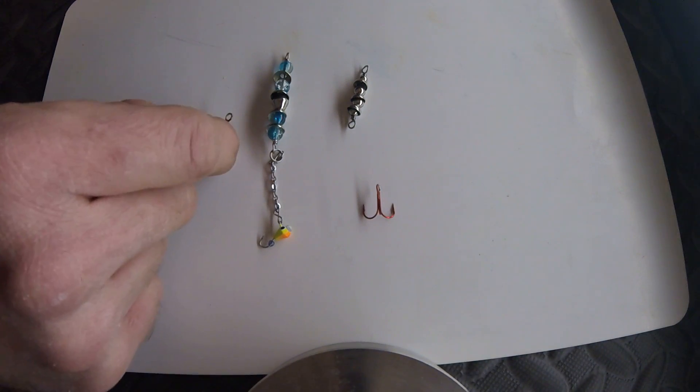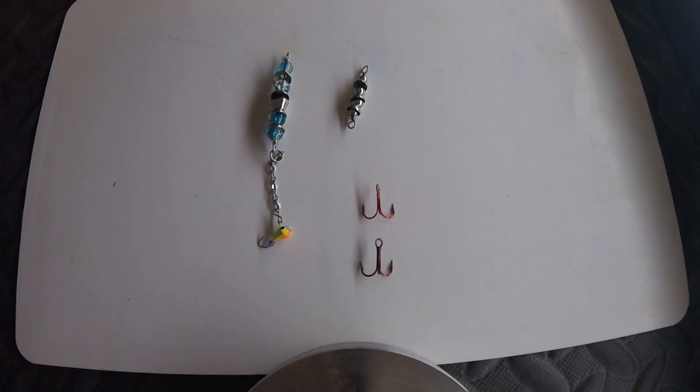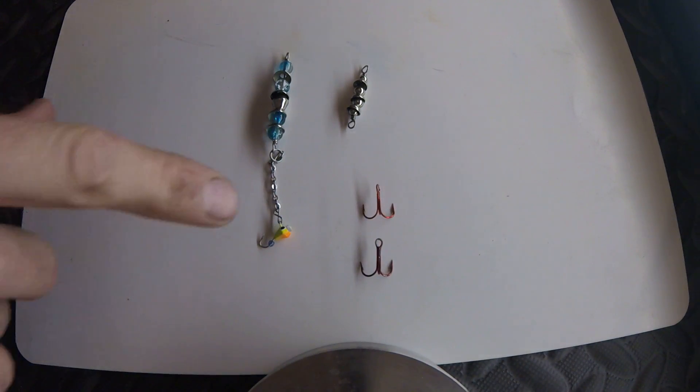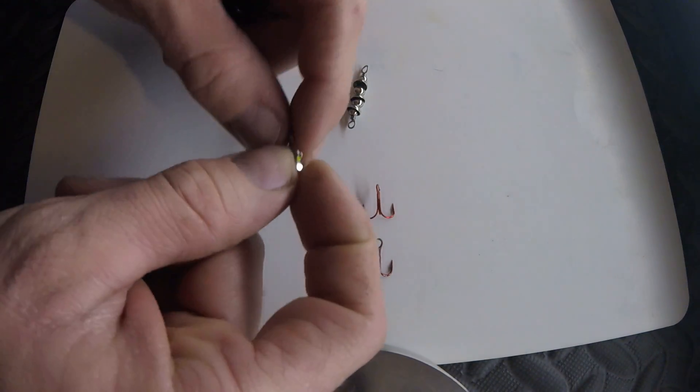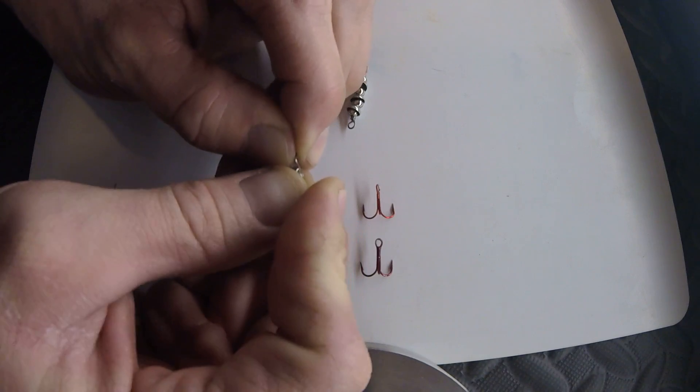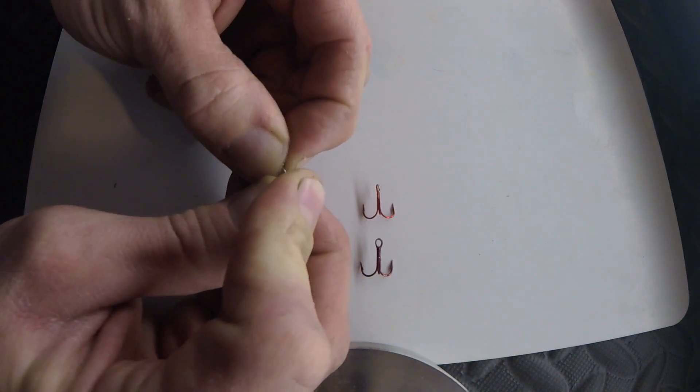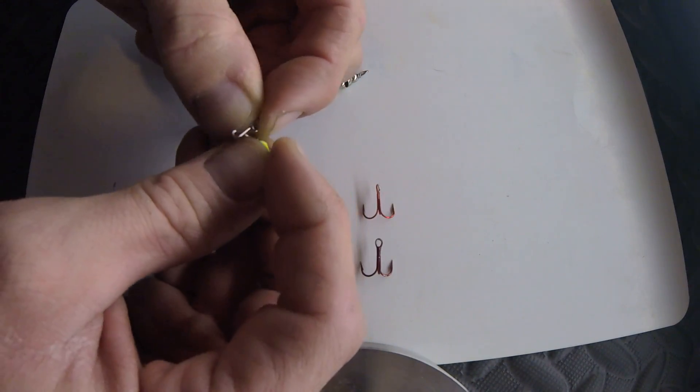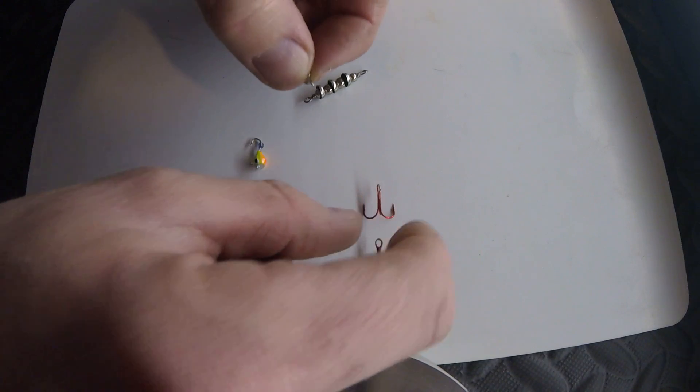You guys get the idea. Providing that the jig head has a big enough hole in the hook, you can change your stuff out relatively fast. It's easier to do when your hands aren't frozen though.